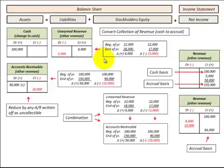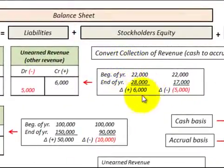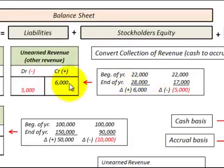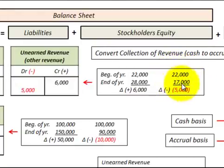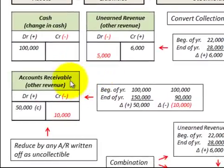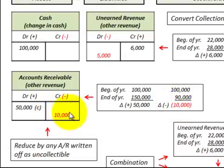When making this conversion to an accrual basis, we look for changes in our accounts. For example, unearned revenue had an increase of $6,000 for the year — beginning balance of $22,000, ending balance of $28,000 — so we'd credit or increase unearned revenue by $6,000. Where unearned revenue had a decrease, with a beginning balance of $22,000 and ending balance of $17,000, that's a $5,000 reduction, so we'd debit or decrease unearned revenue. The same logic applies to accounts receivable — increases are debited, decreases are credited.